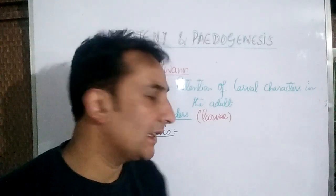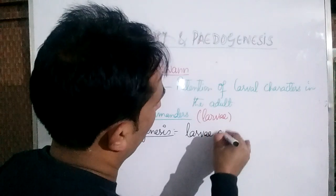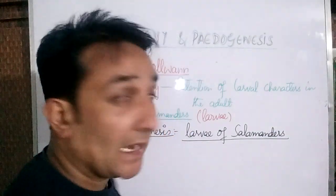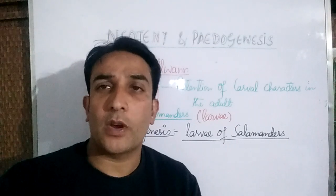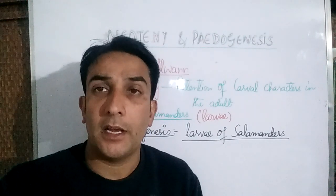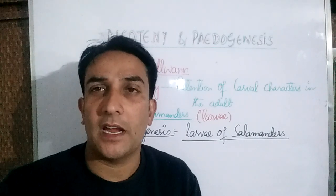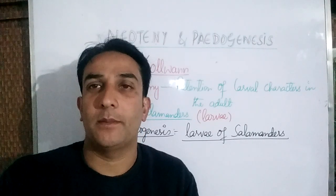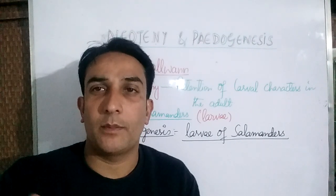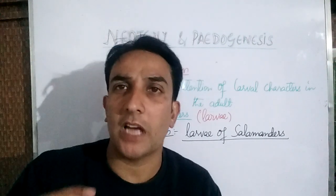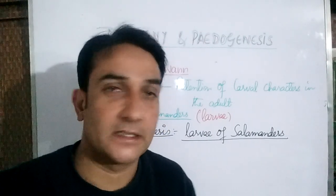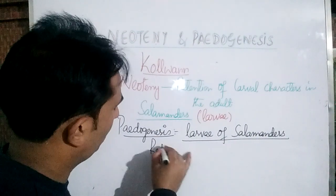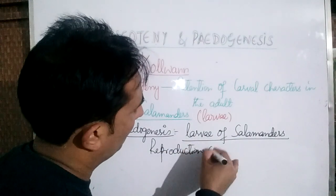The example here is again the larvae of salamanders. The larvae of salamanders show precocious development, meaning they show gonadal development in the larval stage and reproduction is also carried out in the larval stage. So this type of phenomena is known as Pedogenesis, in which the gonads develop in the larval stage and reproduction is carried out in the larval stage.